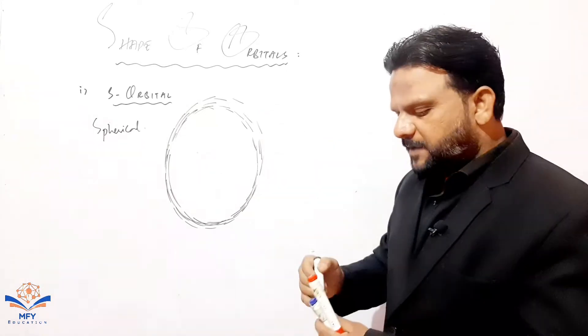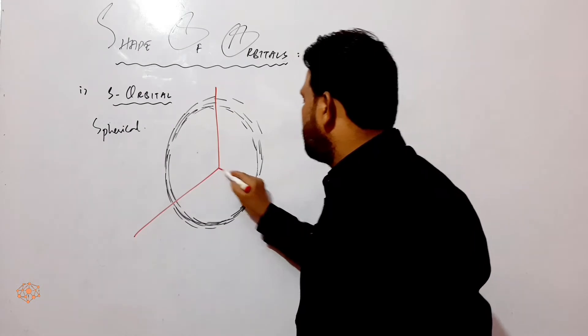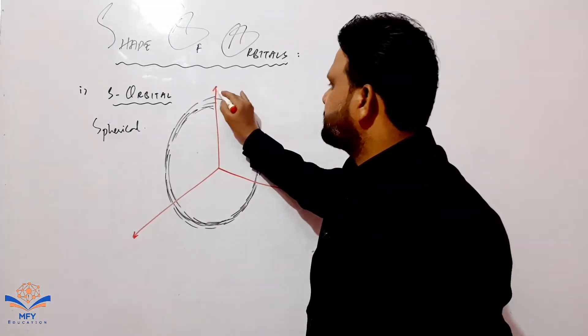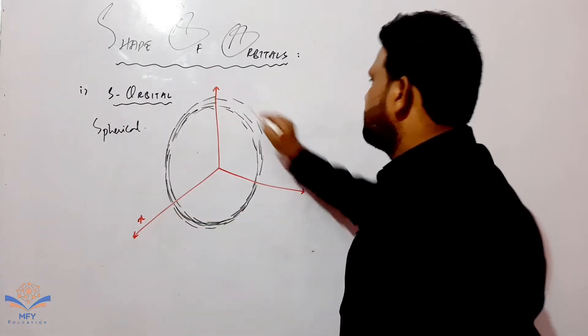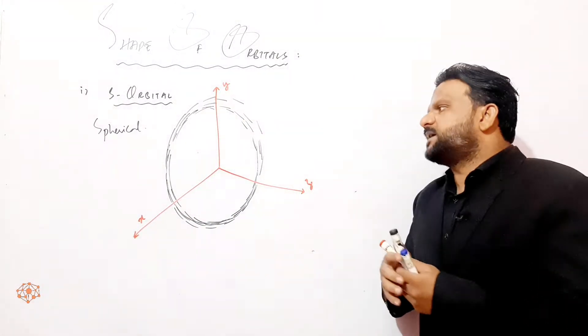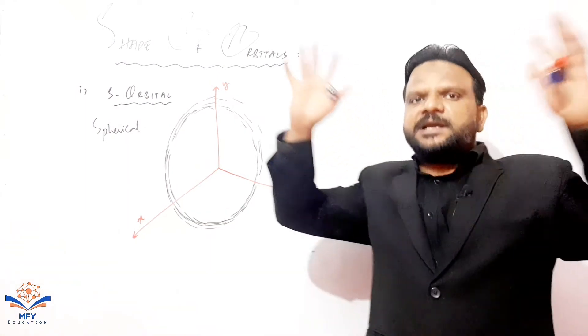For the three-dimensional structure, I will have to draw the x, y, and z axis. This is an s orbital in which electrons revolve around the nucleus in the electronic cloud model.